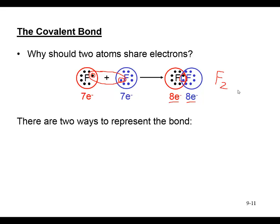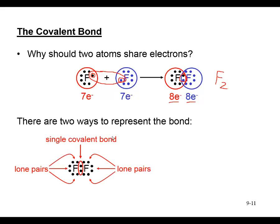There are two ways to represent covalent bonds. Two dots between the fluorine symbols indicate a single covalent bond — every two electrons shared represent one bond. Every electron pair not involved in bonding is a lone pair. In the fluorine molecule there are six lone pairs, or twelve electrons in non-bonding groups, and two electrons involved in the single covalent bond.